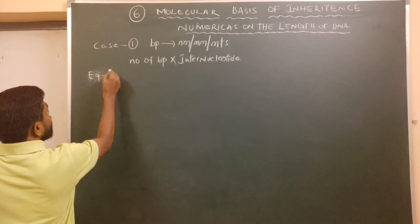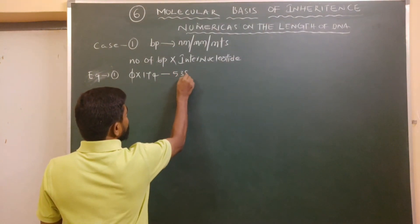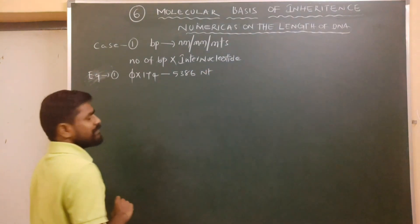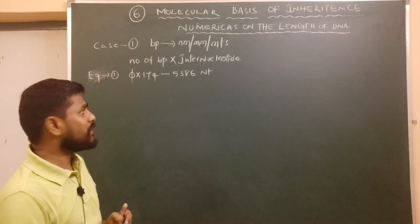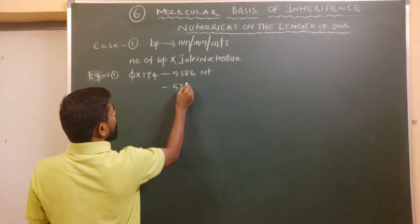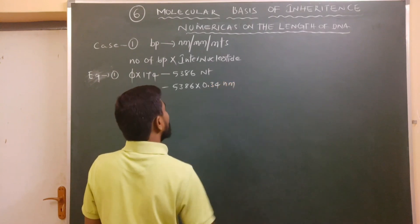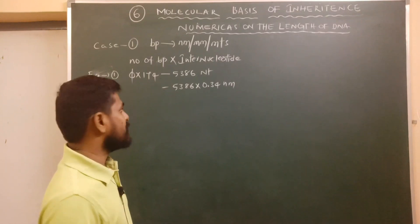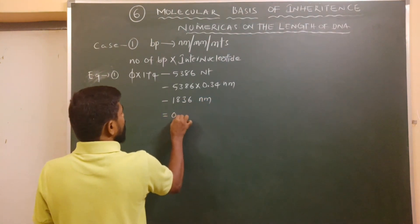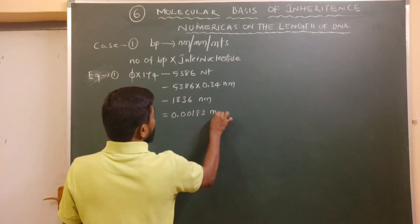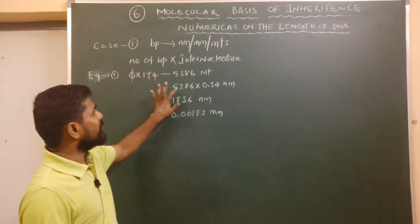The example question is φX174. The length of DNA in terms of base pairs is 5386 nucleotides. What is the length of the DNA in terms of nanometers or millimeters? Simply, we have to multiply the number of base pairs with the inter-nucleotide length, that is 0.34 nanometers. Here you will get 1836 nanometers or 0.00183 millimeters. Just this is the answer.